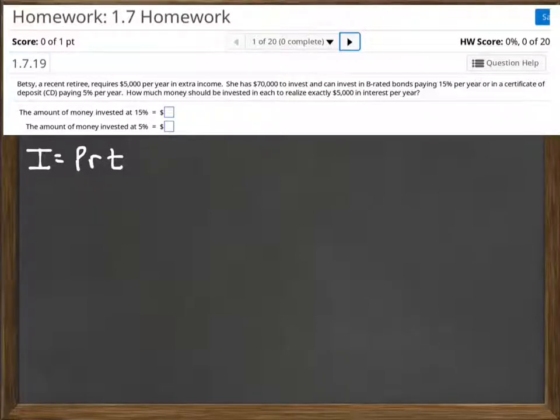So in this problem we read that Betsy, a recent retiree, requires $5,000 per year in extra income. She has $70,000 that she has available to her that she can invest in two different options: B-rated bonds that pay 15%, or a certificate of deposit that pays 5%.